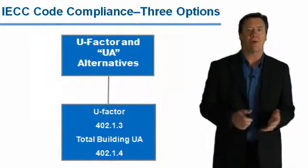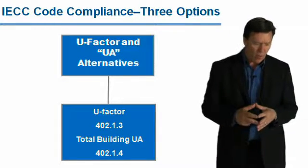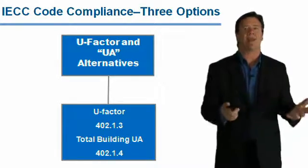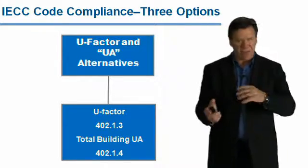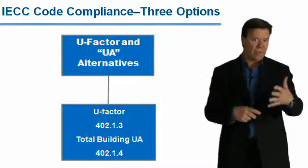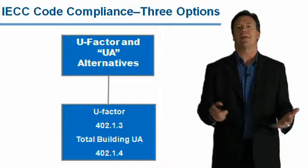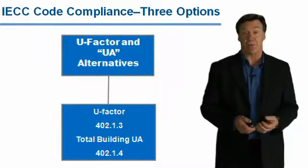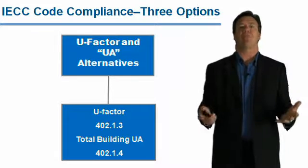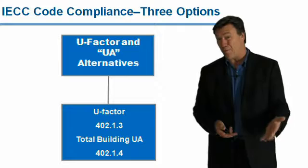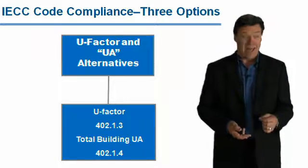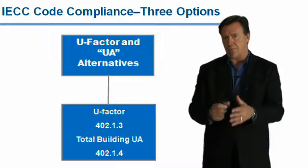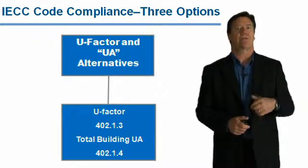The second method is what we call a U-factor or UA alternative. These are used in two basic areas. One is, for example, we're using SIPs panels or log homes or maybe advanced framing, where the R-value of the material is really different than a conventional framed wall. This allows us to take the U-factor into account because, for example, when you look at a typical framed wall, framing accounts for about 20% to 25% of its surface area. So if you have 25% framing, that means in 1,000 feet of wall that's at R19, really about 250 feet of that wall is at about R4.35, which is the R-value of a stud, and 75% is at R13.